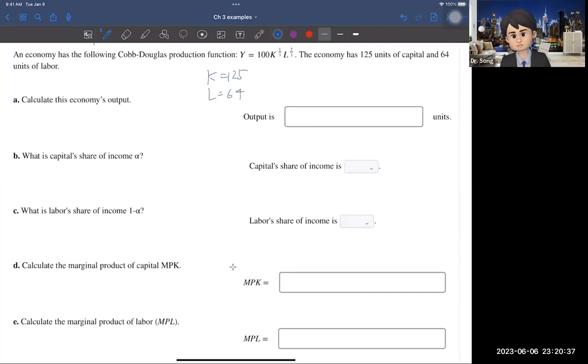So, the questions are very simple. You just need to plug in the numbers into the equation. So, that being said, Y equals 100, times 125, to the power of one-third, times L, the 64 to the power of two-thirds.